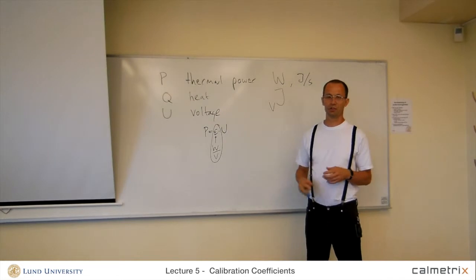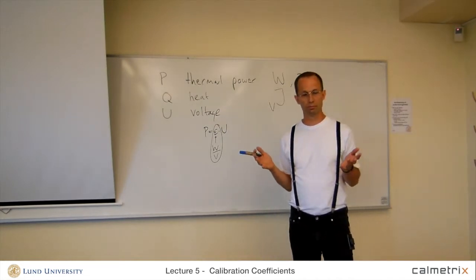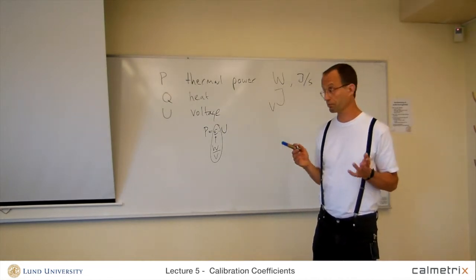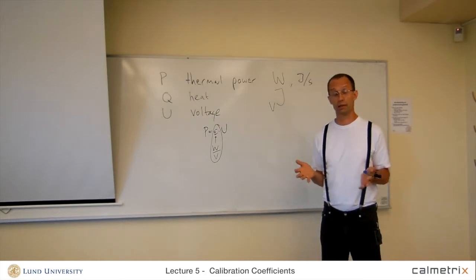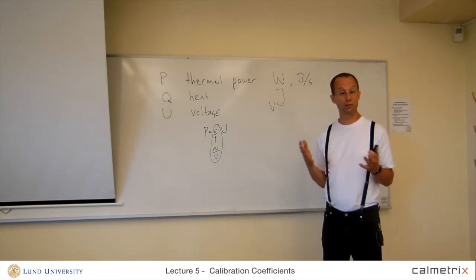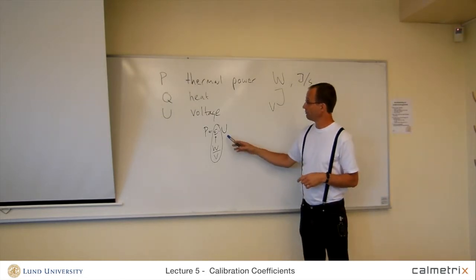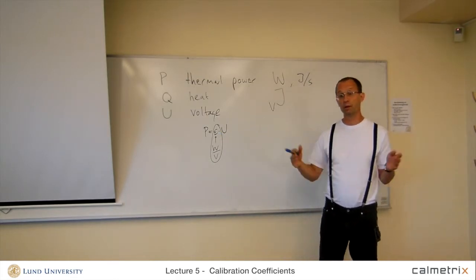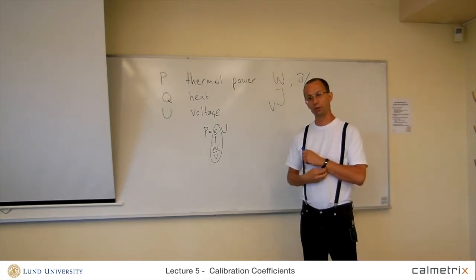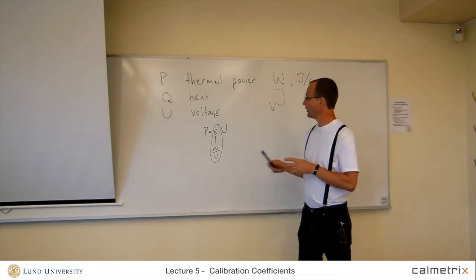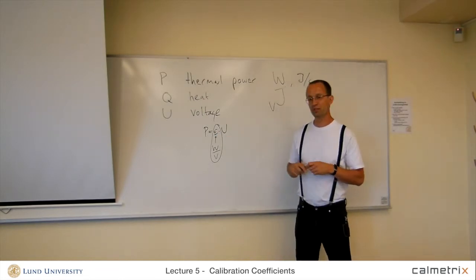Both the calibration coefficient and the baselines are, in most calorimeters, very stable. Heat conduction calorimeters are stable instruments. And if you measure the calibration coefficient, for example, over a year, you may see a change of a percent or something. It's very small. So normally, these coefficients are very stable.